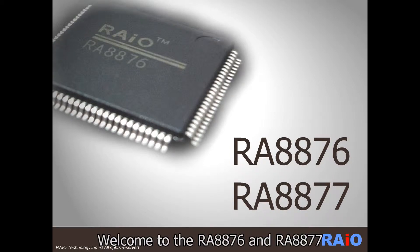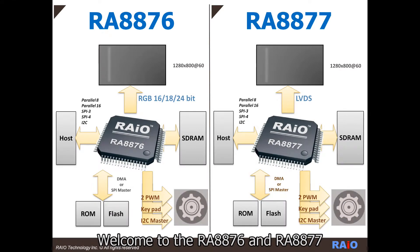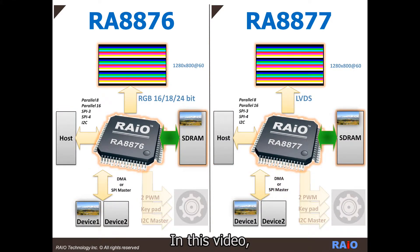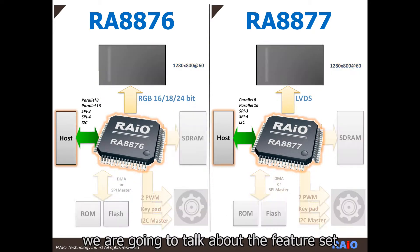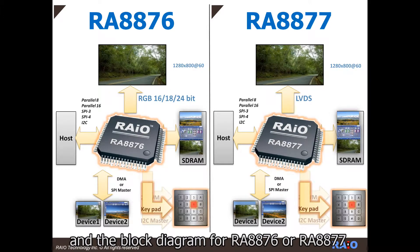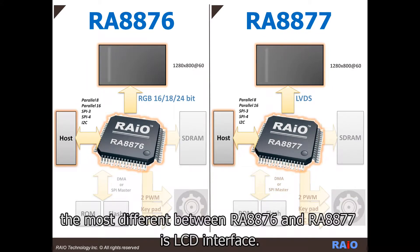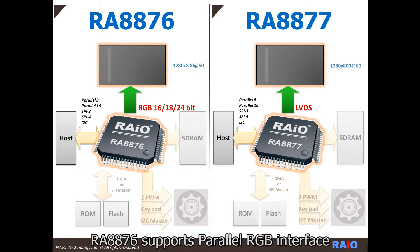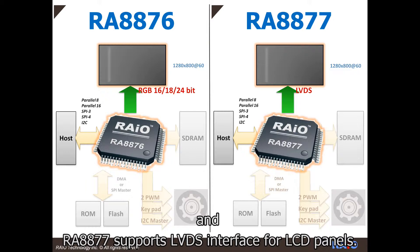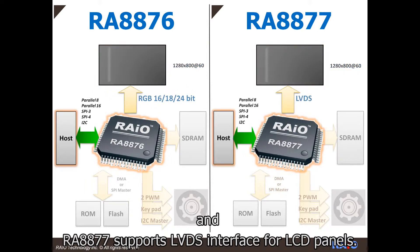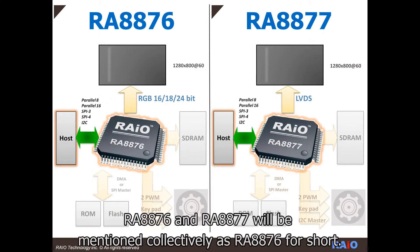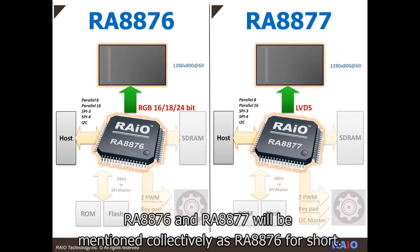Welcome to the RA8876 and RA8877 overview product training module. In this video, we are going to talk about the feature set and block diagram for RA8876 or RA8877. As you can see, the most notable difference between RA8876 and RA8877 is the LCD interface. RA8876 supports parallel RGB interface and RA8877 supports LVDS interface for LCD panels. In the following introduction, RA8876 and RA8877 will be mentioned collectively as RA8876 for short.